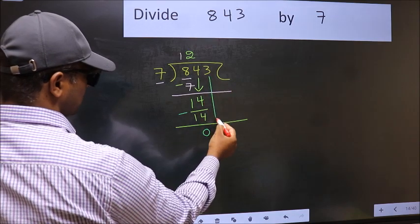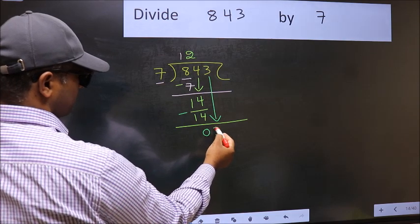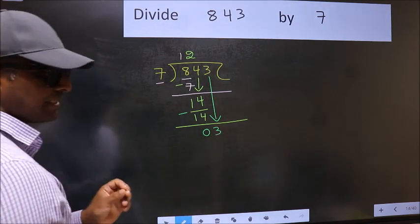After this, bring down the next number. So 3 down. After this step, the mistake happens.